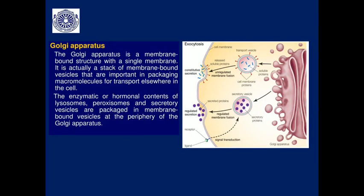Another cytoplasmic organelle is the Golgi complex, or Golgi apparatus — a membrane-bound structure consisting of stacked membrane-bound vesicles. The Golgi complex is the packaging unit of the cell, where lysosomes, peroxisomes, and secretory vesicles are formed. Outer blebbing of the membrane can be observed, representing this packaging function.